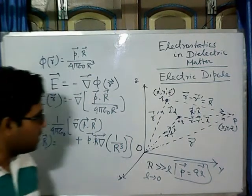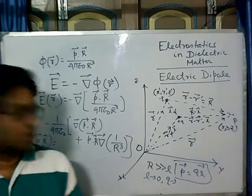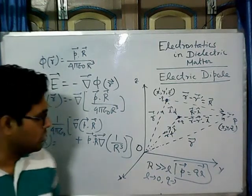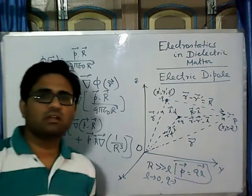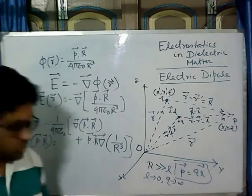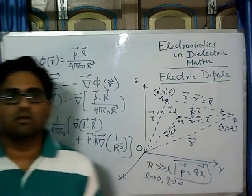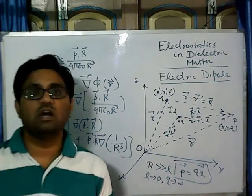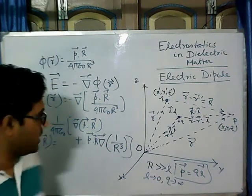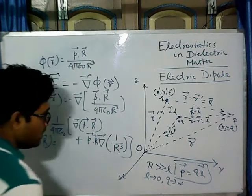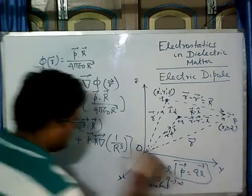If L tends to 0 and we keep this Q value at a particular value, then the dipole moment will be very close to some value. But if we want to get a constant dipole moment, we will also consider Q tends to infinity, so that the dipole moment remains the same. Here L is very small and to get a finite dipole moment, Q has to be large. So the value of the dipole moment will be constant.